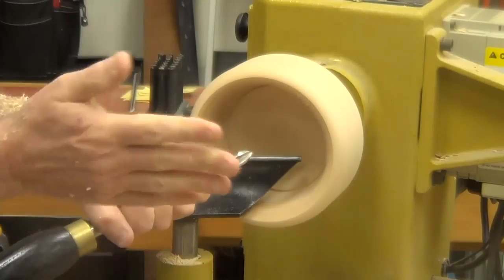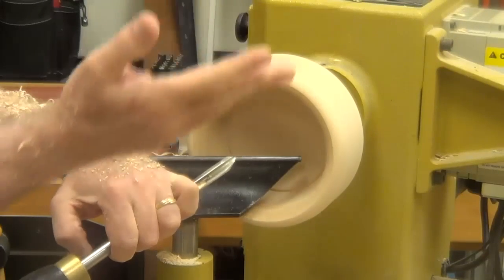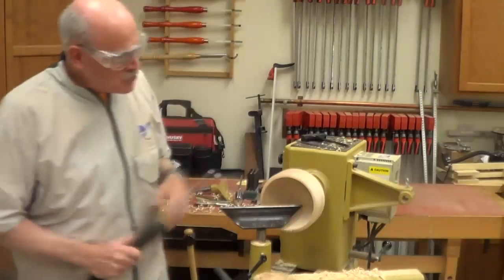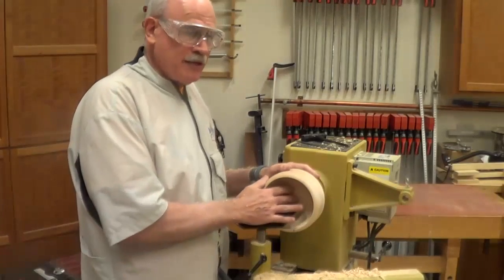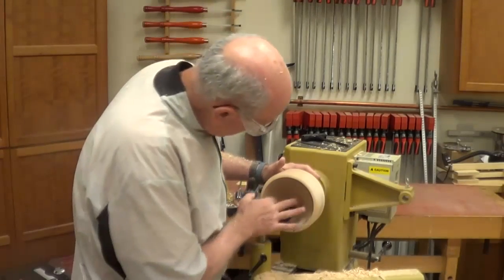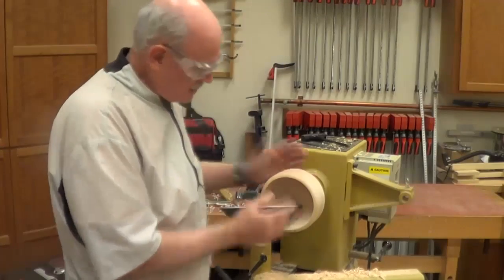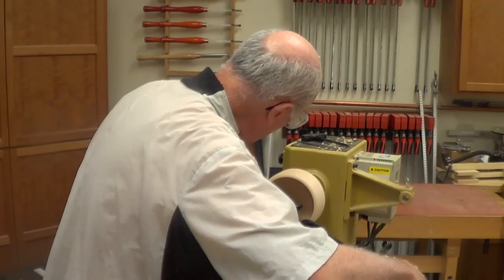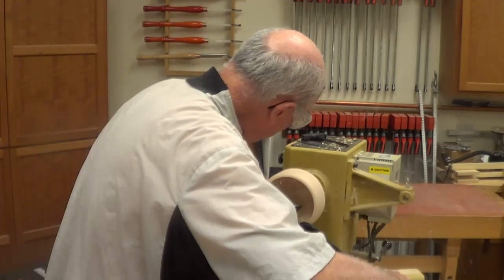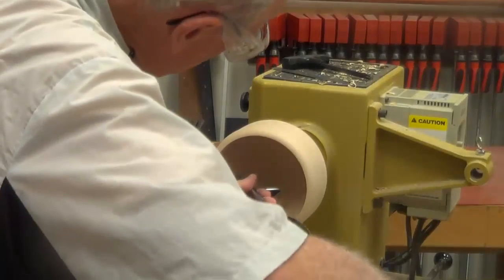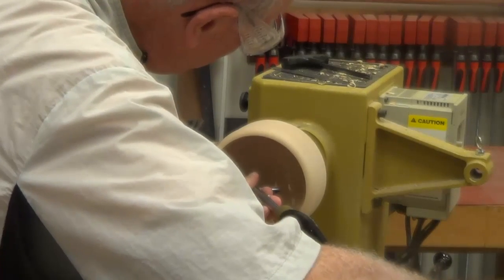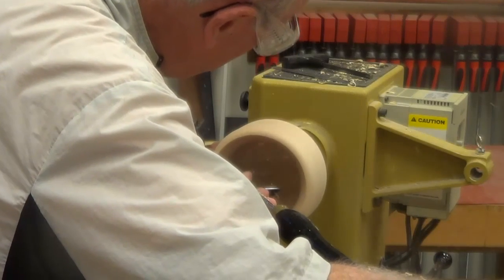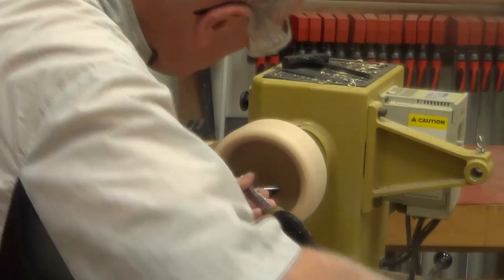Another thing you could have done is drill a hole with a drill bit to establish how deep you've got to hollow. Just mark up the drill bit. If this is three and a quarter, drill down to two and three quarters. And then you know when you reach that, you're pretty close to the bottom. Okay. So I've gotten almost as deep as I need to be. Maybe another eighth of an inch would be fine. But I still got all this wall thickness over here that I got to get rid of. I could still do some more with the bowl gouge, so I will. I prefer to use the bowl gouge as long as I can.